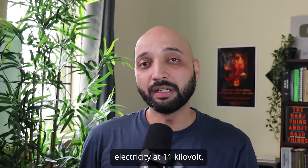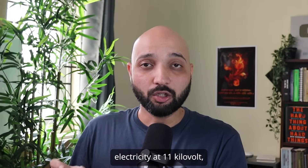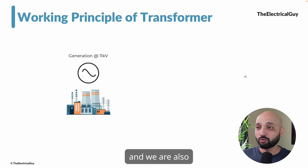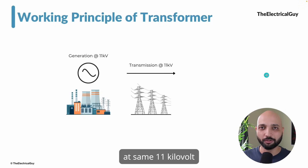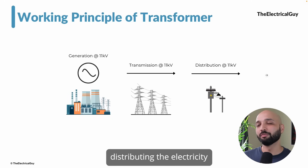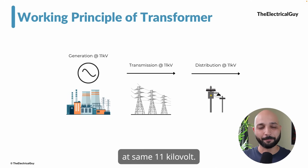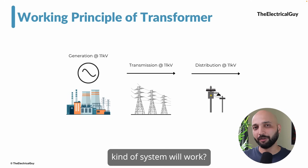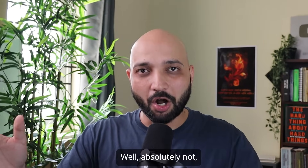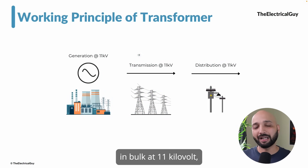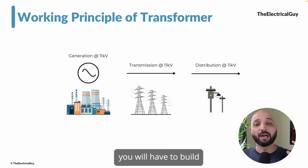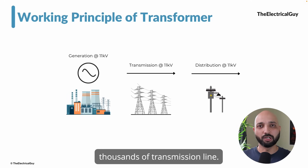Imagine we are generating electricity at 11kV and also transmitting and distributing it at that same 11kV. This kind of system will absolutely not work. The first problem is that to transmit power in bulk at 11kV, you would have to build thousands of transmission lines.